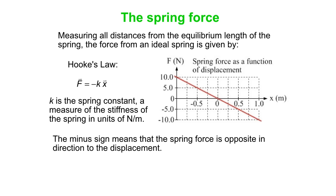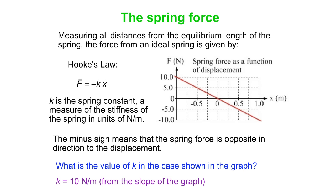And again, the minus sign means the spring force is opposite in direction to the displacement. So what do you think the value k is for this particular graph here? And so what are we asking for? We're really asking for the slope of that line. And you can see that is 10 newtons per meter.